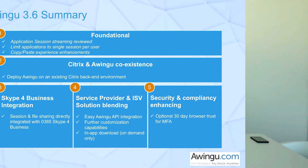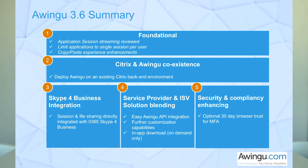As the slide shows, Owingo 3.6 is really built out of five different components. The first one is foundational — we've done a lot of work to enhance the foundations, and this is very diverse in terms of the functionalities below this.